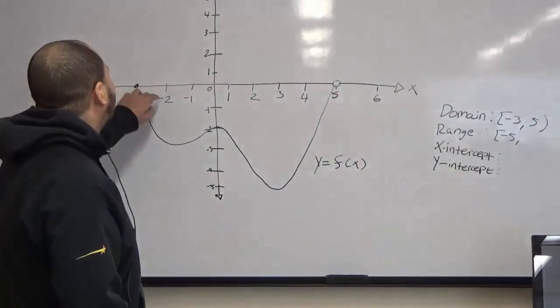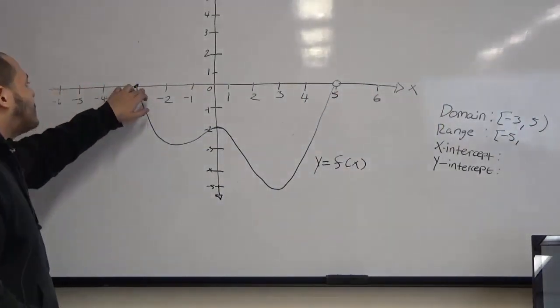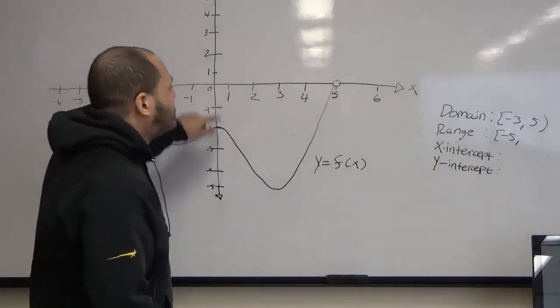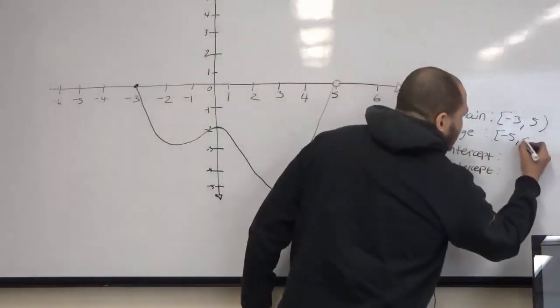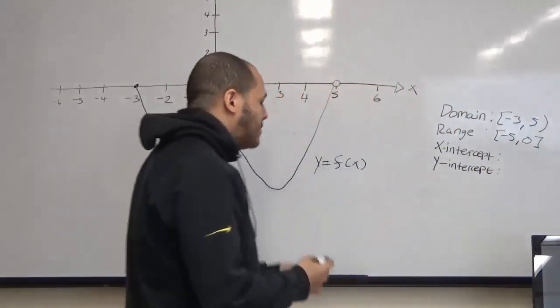And we go all the way up to where our graph ends. Here we have a closed point, so that's where our graph ends at 0. Zero is also included, closed interval. So that's our range.